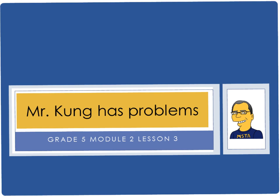Hello and welcome to another episode of Mr. Kung Has Problems. Tonight in grade 5 we are working on module 2, lesson number 3, and our goal today is to be able to write and interpret numerical expressions and compare expressions using a visual model. So we will do that in a couple of different ways today. We'll think about math, we'll draw pictures of math, and we'll get you through your homework tonight.